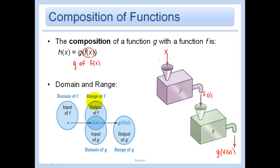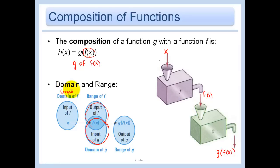If I'm talking domain and range: the domain of f is just what I input into the f machine, which is x. The range is what it pops out — f of x. But that f of x then gets popped into the g machine, so it becomes the domain of g. The output of the f machine is the same as the input to the g machine.